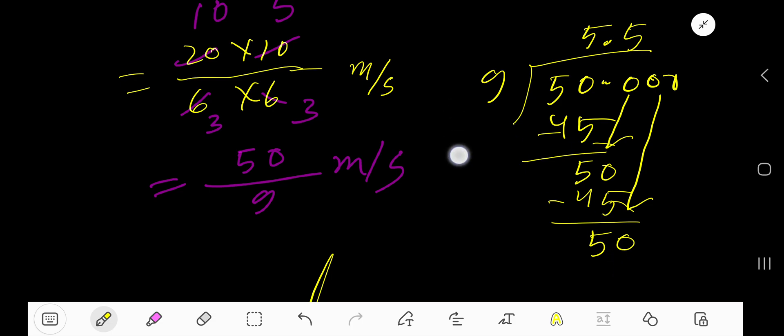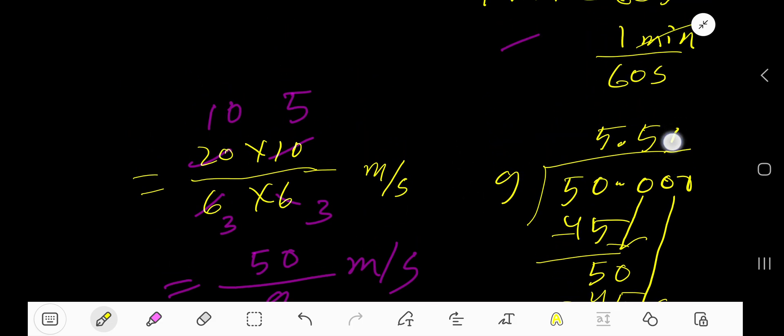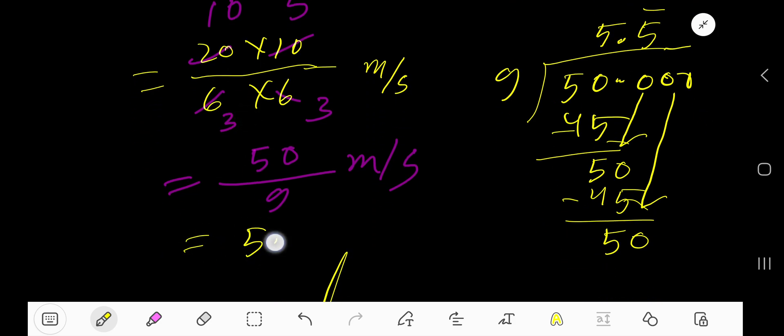9 goes into 50 again 5 times. This 5 is repeating. You can place a bar here to mean that this 5 is repeating. So our answer is 5.5 bar meters per second, and this is the result.